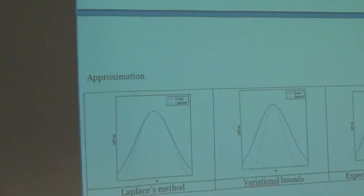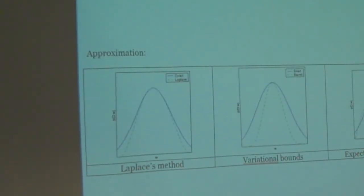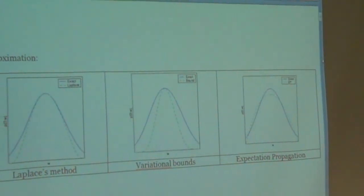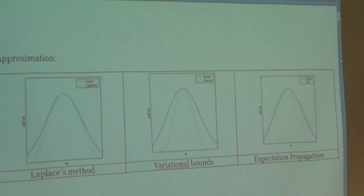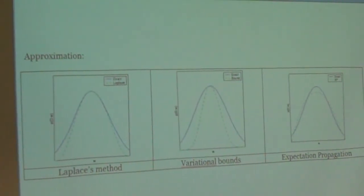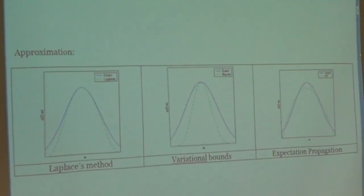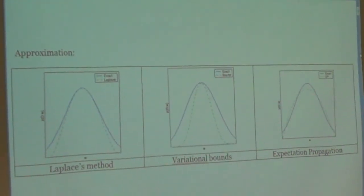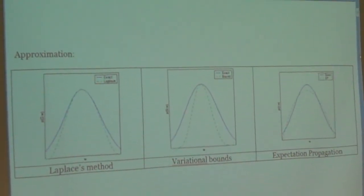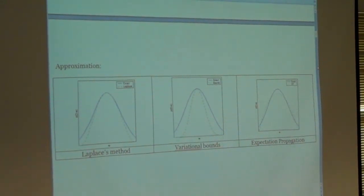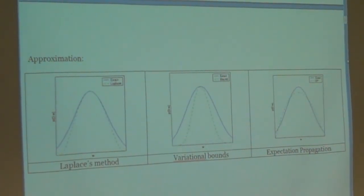I want to say something about the approximation. The approximation method that try to approximate gaussian distribution. Three method is commonly used.